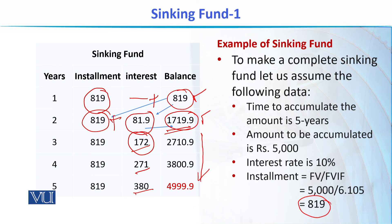If our calculations are very accurate to many decimal places, we will get a final balance exactly equal to the amount we wanted. But if we have rounded off the installment amount, there is a possibility the balance at the end of five years may differ slightly. If we use software to calculate the installment very precisely, we get exactly the balance we want. In this case, because we did not carry many decimal places, we get an amount that is 0.1 rupees less — due to approximation.